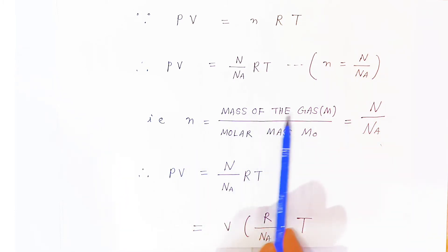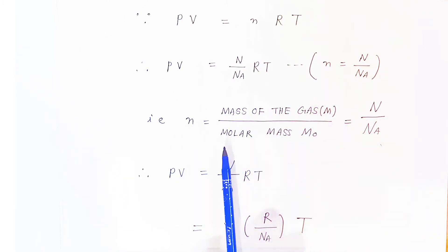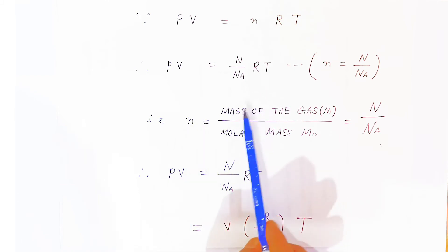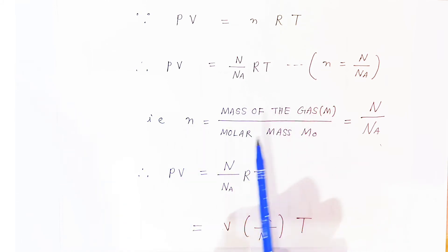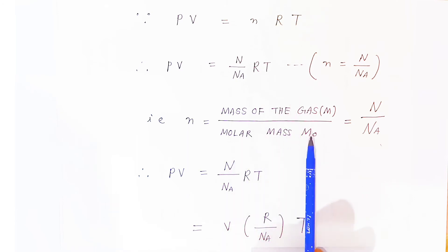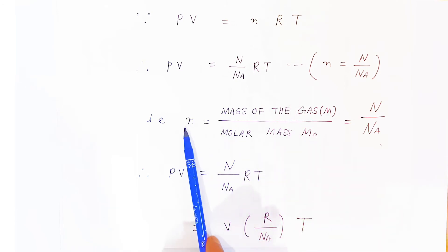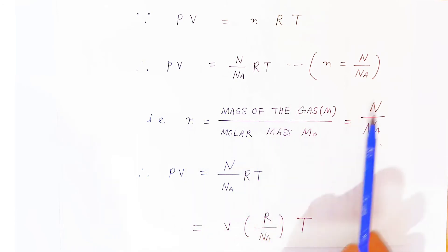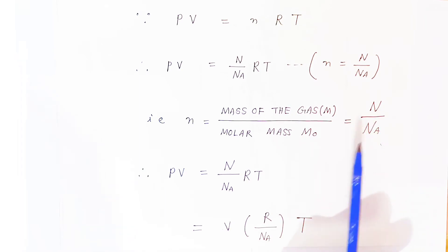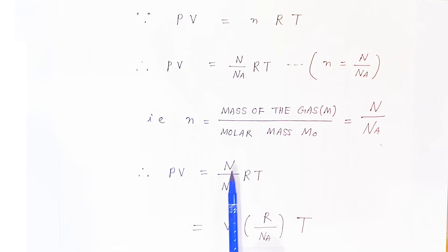Alternatively, if you know the mass of the gas and divide it by the molar mass of the gas, you will also get the number of moles. So n = mass / molar mass = N / Nₐ. Substituting, PV equals (N / Nₐ) × R × T.